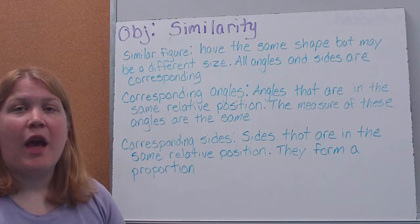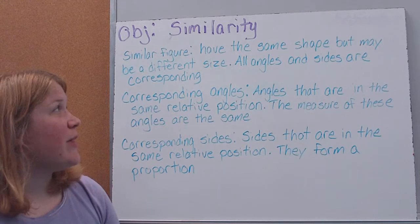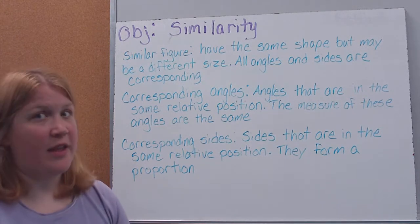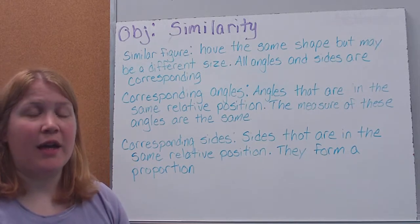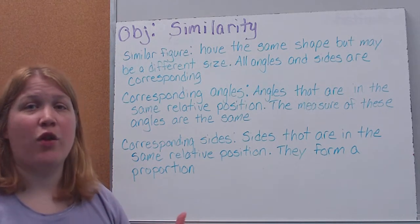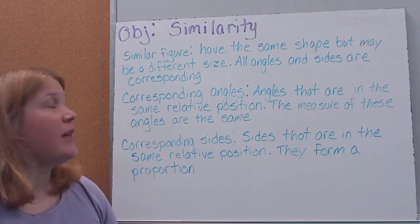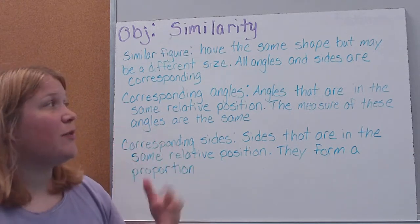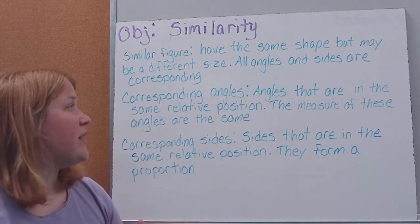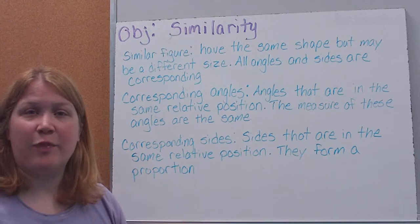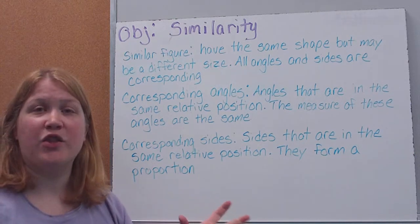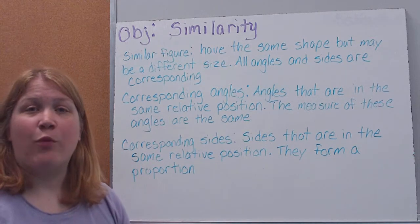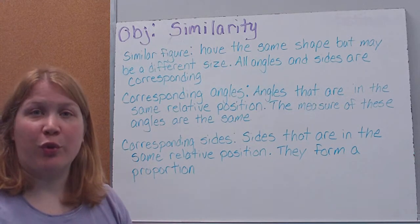So, similar figures. What it means if figures are similar is that they have the same shape, but their lengths might have different sizes. However, all their angles are going to correspond. Now, corresponding angles are angles that are in the same relative position, meaning in the same spot on the two figures that look alike. And the measure of them would be the same, or congruent.